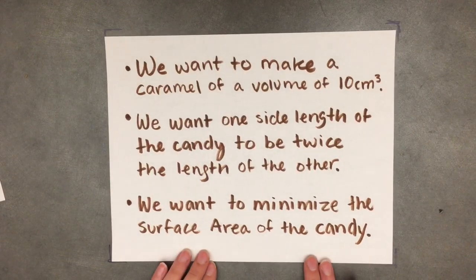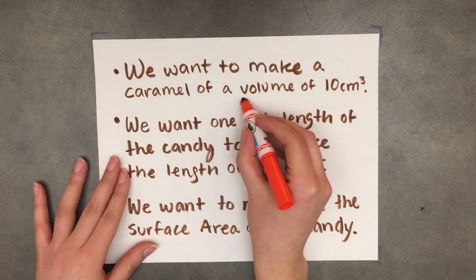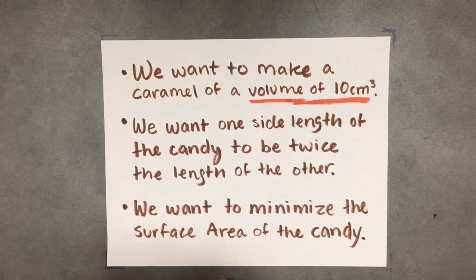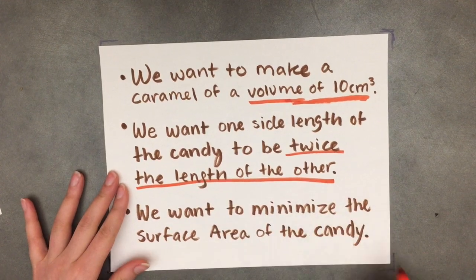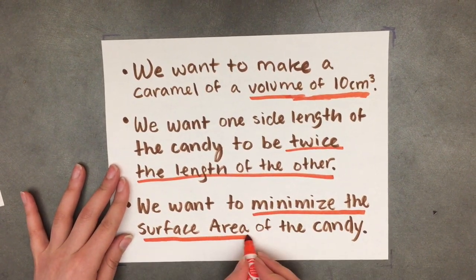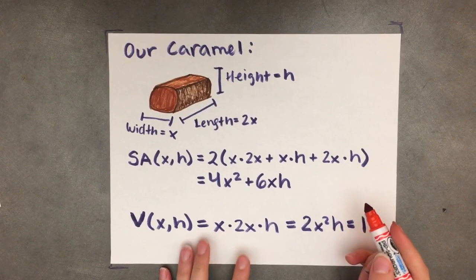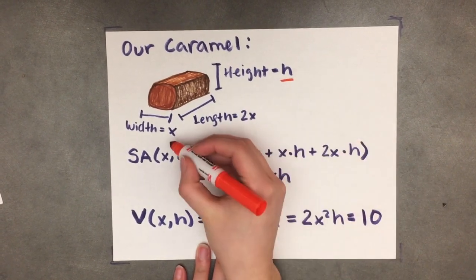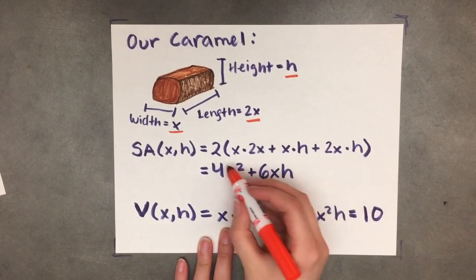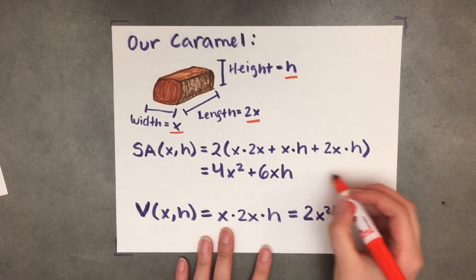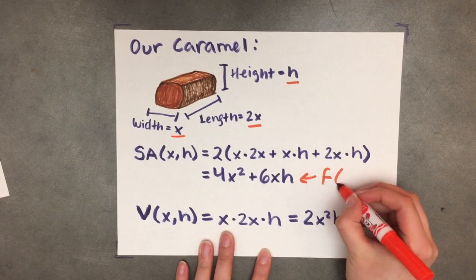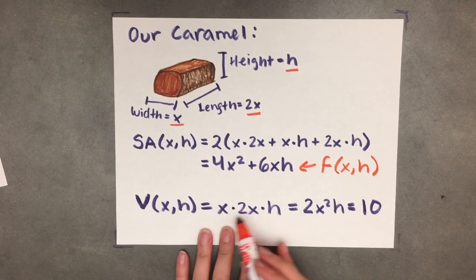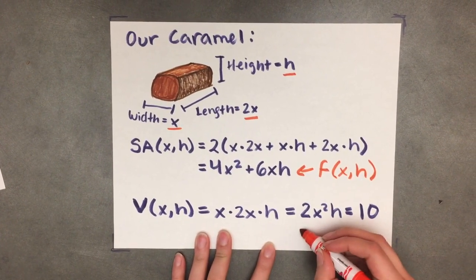Now we're going to look at a problem. We want to make a caramel of a volume of 10 centimeters cubed. We want one side length of the candy to be twice the length of the other, and we want to minimize the surface area of the candy. Here we have our height h, our width x, and our length 2x. We can calculate the surface area for this caramel by adding up the surface area of all the faces, and it simplifies to one expression. Next we have our volume equation, which is our constraint equation, found by multiplying the side lengths together, and we know that it equals 10.